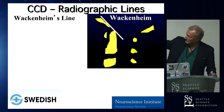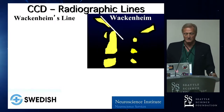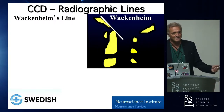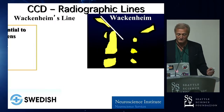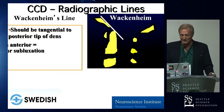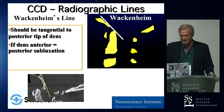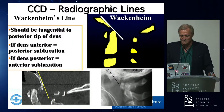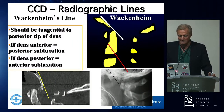Wackenheim's line — the clivus should be close to the odontoid tip. If it's not there, there is a problem. Something has dislodged or dissociated, with anterior and posterior examples.